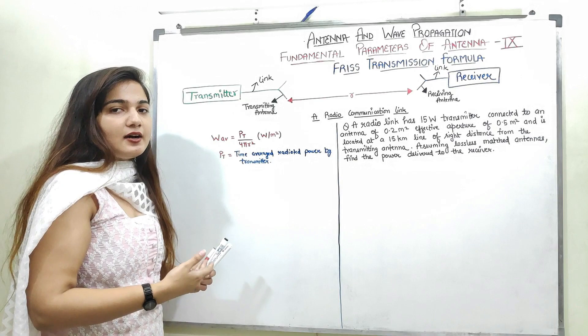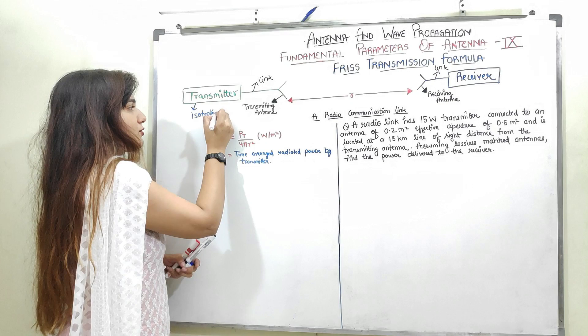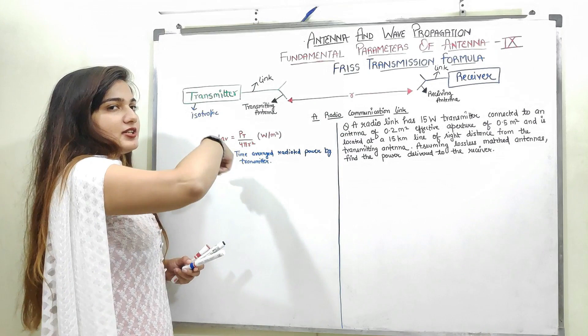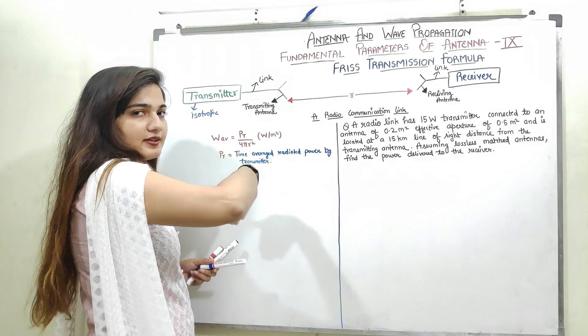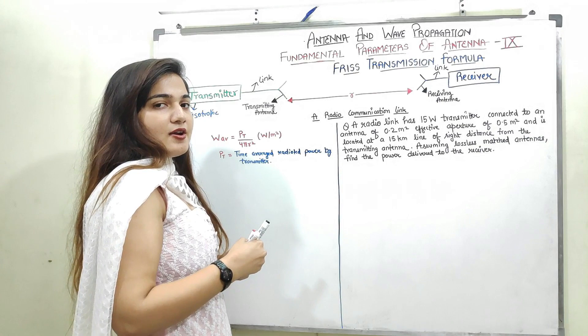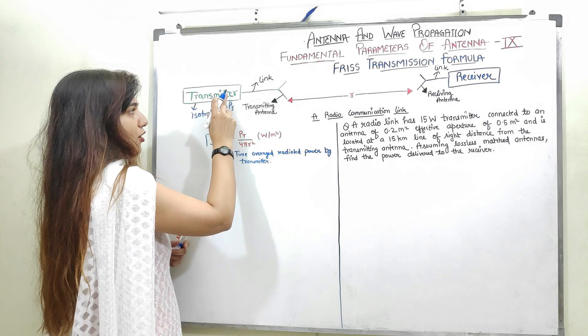Now, if I am considering my transmitting antenna to be an isotropic antenna, it would produce its radiation in 360 degrees surrounding the transmitter. If I have this radius R, it would produce the radiation with radius R and 360 degrees surrounding it. So the total area in which it is producing its radiation is 4πR². Therefore, the average power density would be given by the transmitted power PT divided by 4πR².